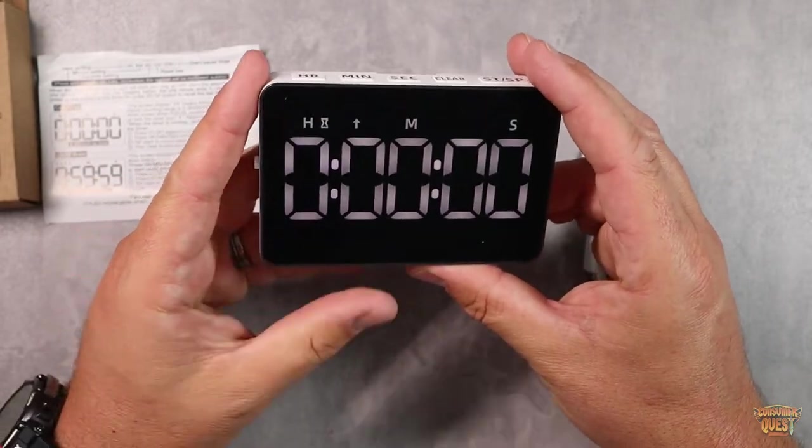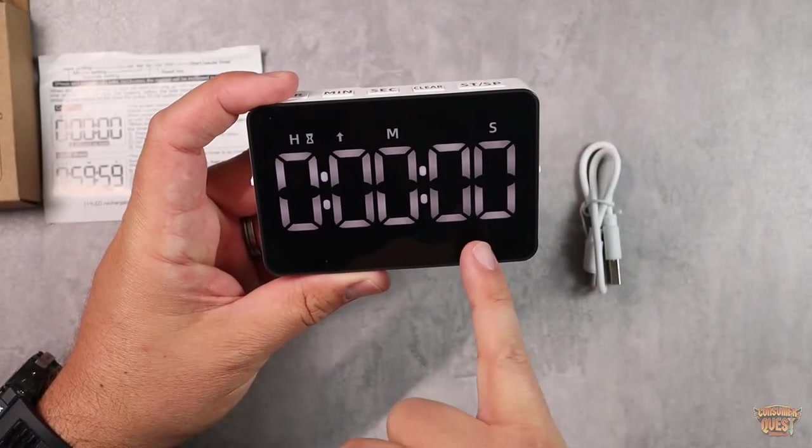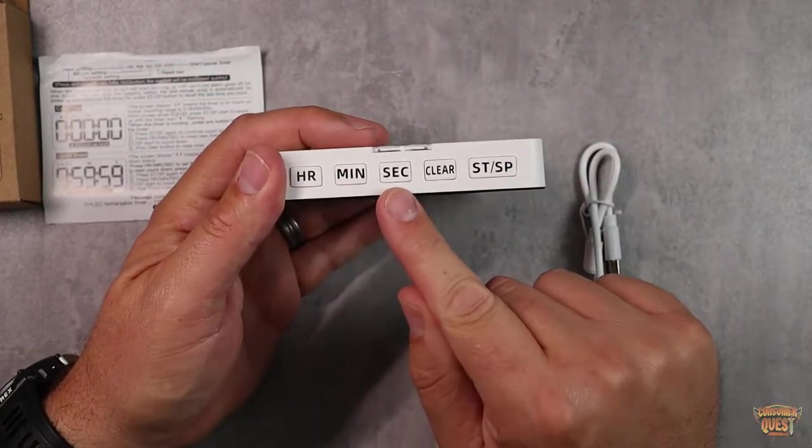So three different brightness settings. I'm going to leave it on the middle one. You can see your hours, minutes, and seconds up on top.